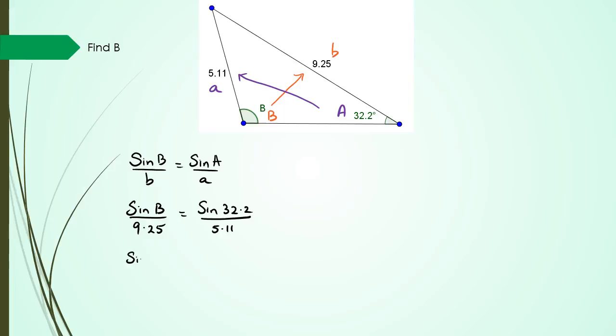As usual, I can write this as sine B equals 9.25 times sine of 32.2 and the whole thing divided by 5.11. So really I could say that B is inverse sine of 9.25 times sine 32.2 and the whole thing divided by 5.11.